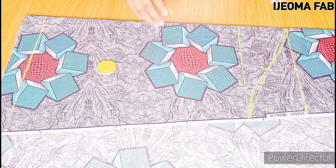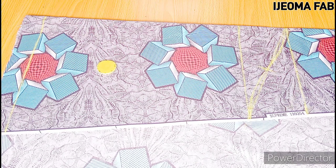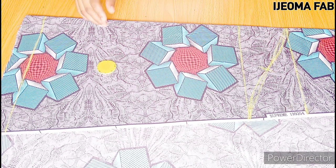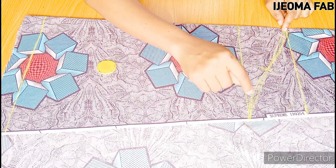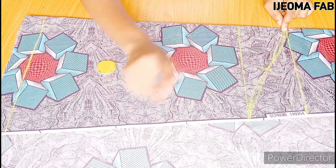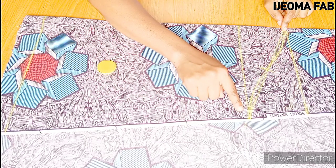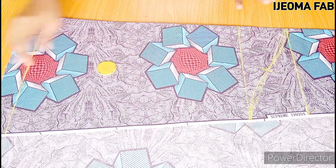After achieving the armhole curve, the next thing now is to cut this out and our sleeve is ready. You could go ahead to measure what you also have here to make sure it corresponds with what you have on the armhole plus your seam allowance inclusive. The next thing I'm going to do now is to cut this out.